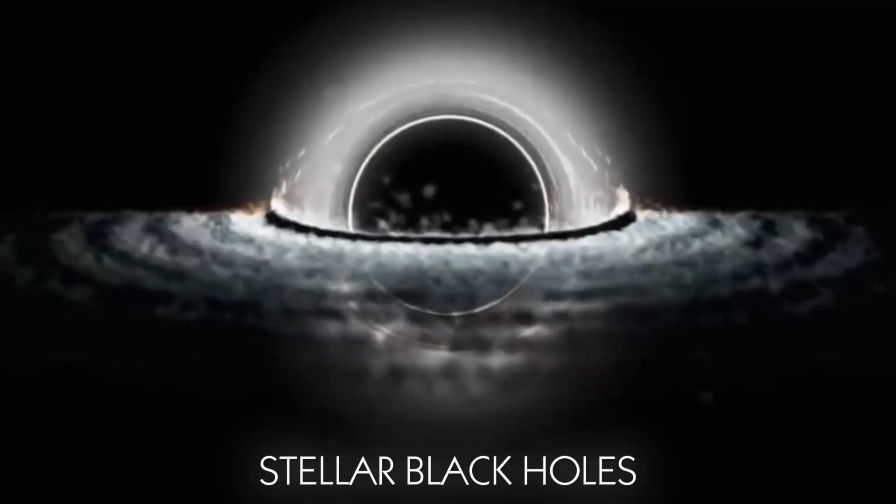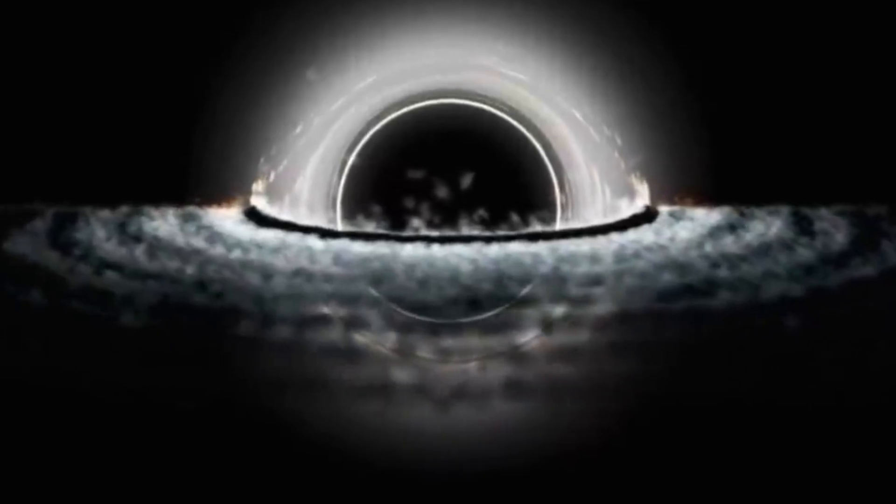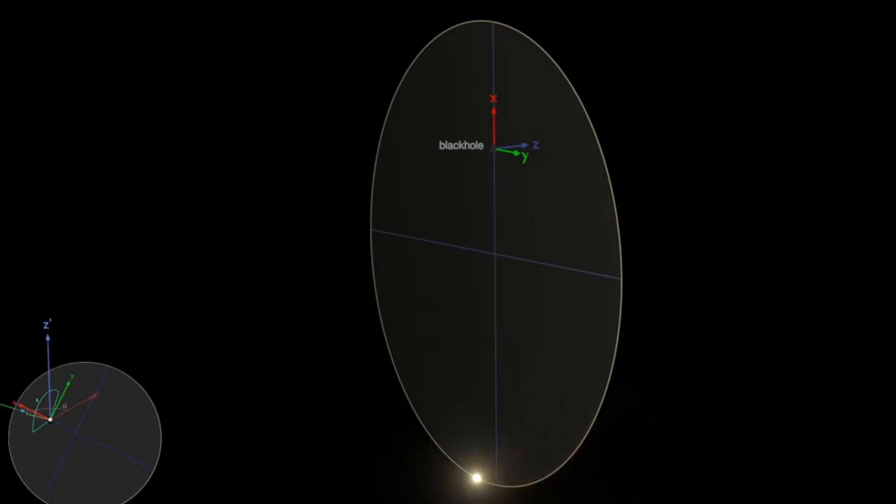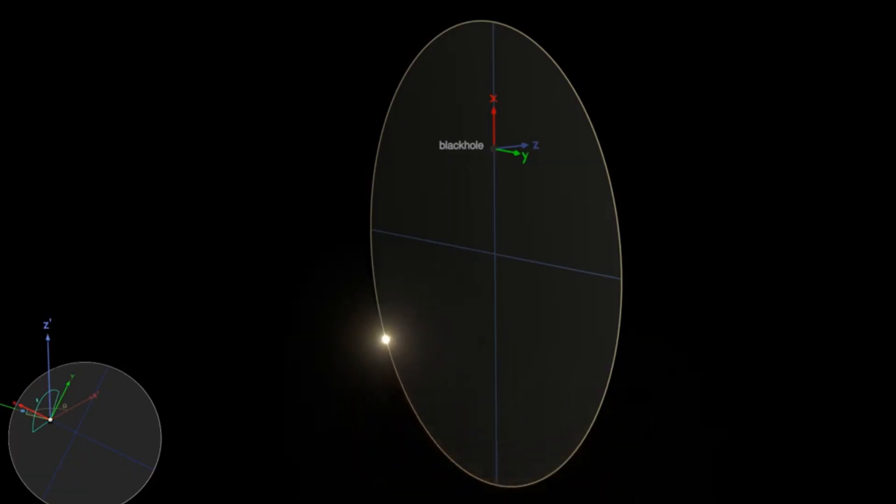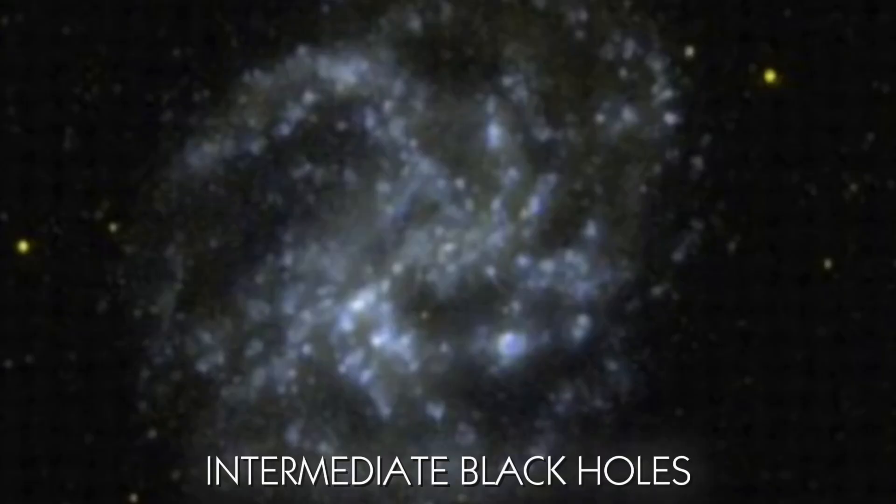Stellar black holes form when massive stars collapse at the end of their life cycle, with masses ranging from a few times that of our sun to about 20 times.